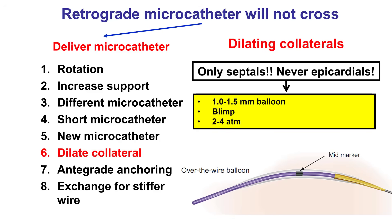The next option is to actually dilate the collateral. Importantly, this should only be done for septal collaterals and never for epicardials, because epicardial rupture can be a catastrophic, potentially life-threatening complication. Septals only — this is typically done with a small balloon, 1.0 to 1.5 mm, inflated at low pressure such as 2 to 4 atmospheres.